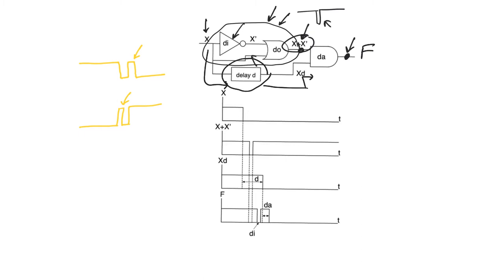The lower path, which gives us XD, is going to try to dictate a transition on the output node F, and it will eventually manage to dictate this transition. However, because the upper path with X + X̄ observes a static hazard, this static hazard is going to cause F to observe a hazard itself. But because F is not static — because F is making a transition — that hazard is now a dynamic hazard. This will become much clearer when we trace these signals through the diagram.